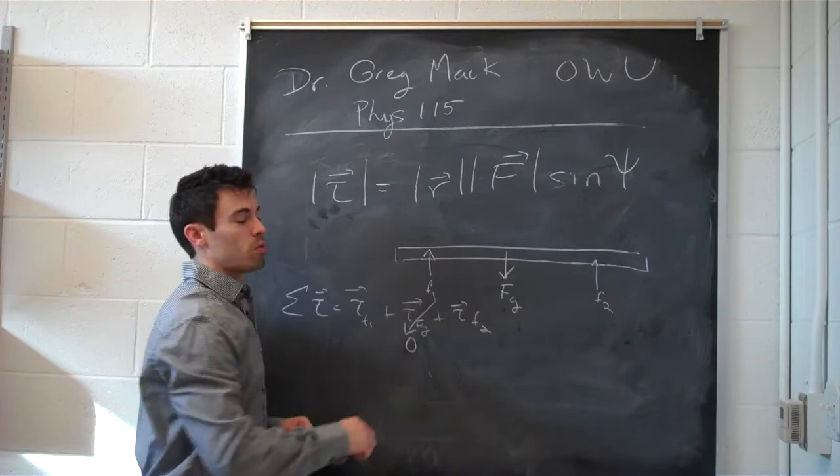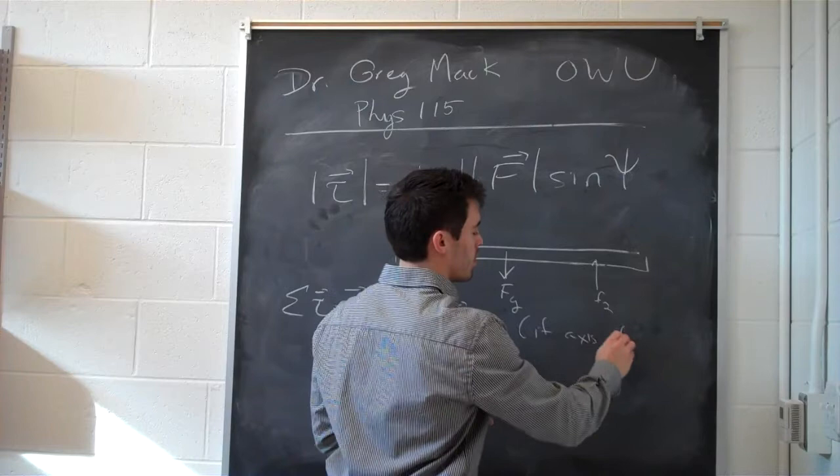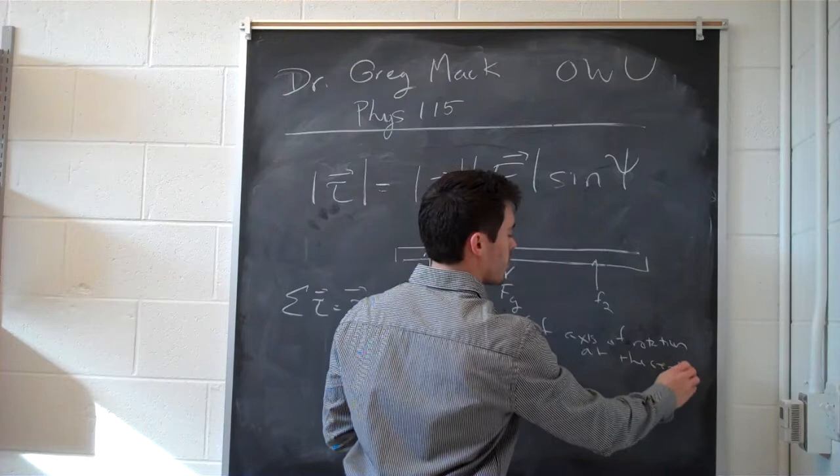The torque of gravity is going to be zero if we put the axis of rotation at the center.